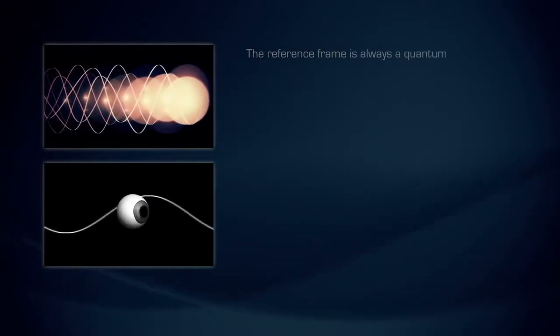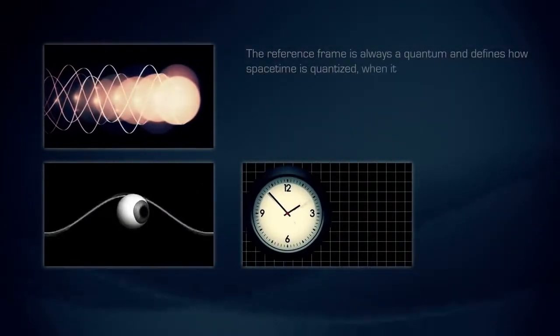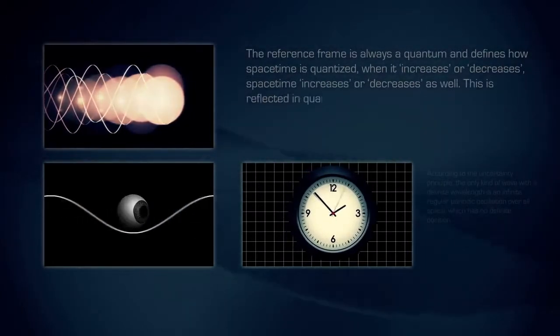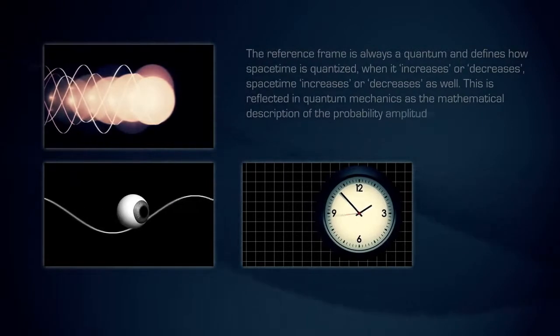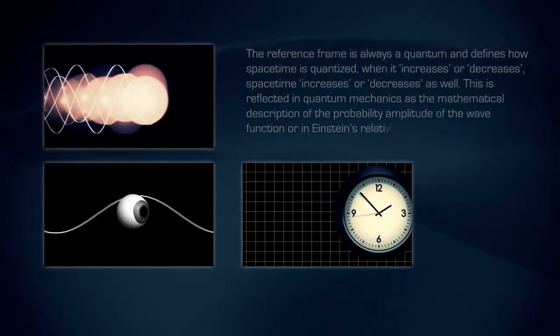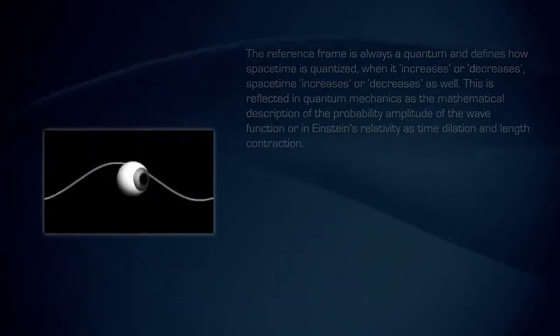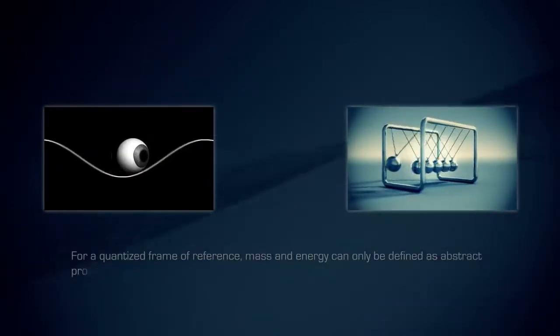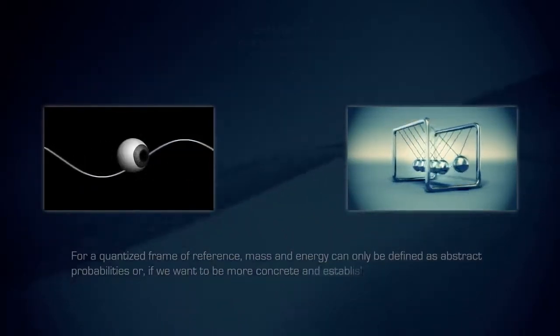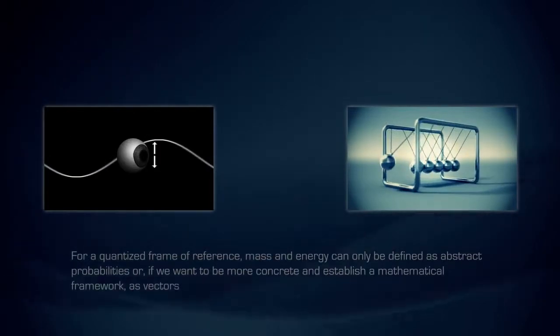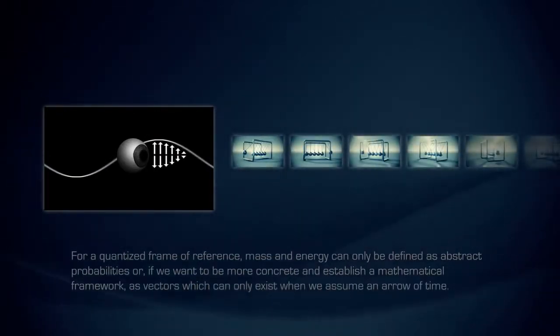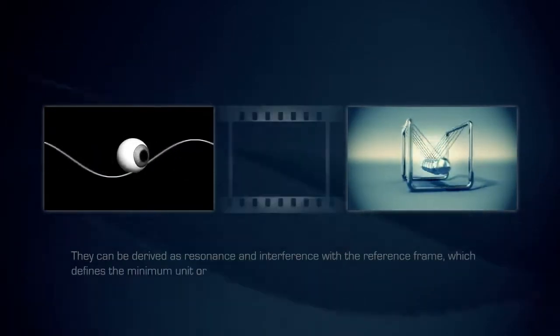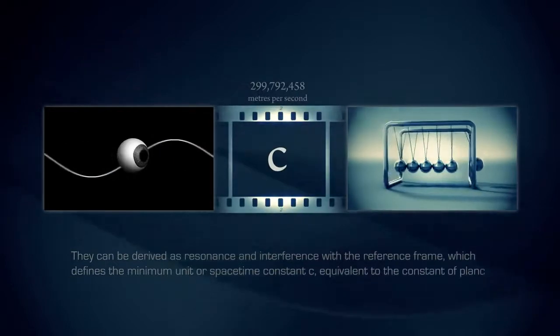The reference frame is always a quantum and defines how space-time is quantized. When it increases or decreases, space-time increases or decreases as well. This is reflected in quantum mechanics as the mathematical description of the probability amplitude of the wave function, or in Einstein's relativity as time dilation and length contraction. For a quantized frame of reference, mass and energy can only be defined as abstract probabilities, or if we want to be more concrete and establish a mathematical framework, as vectors which can only exist when we assume an arrow of time. They can be derived as resonance and interference with the reference frame, which defines the minimum unit or space-time constant C, equivalent to the constant of Planck in quantum mechanics.